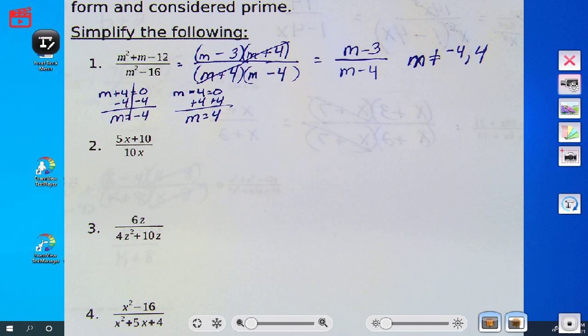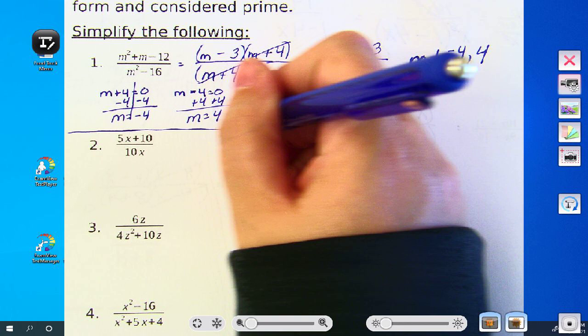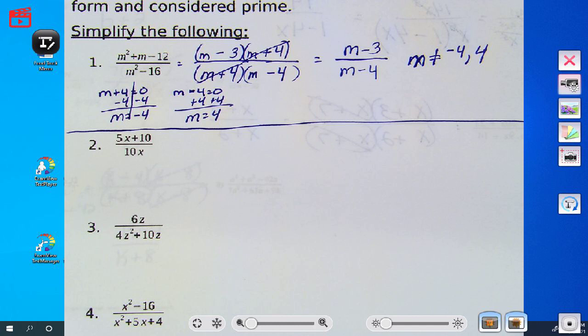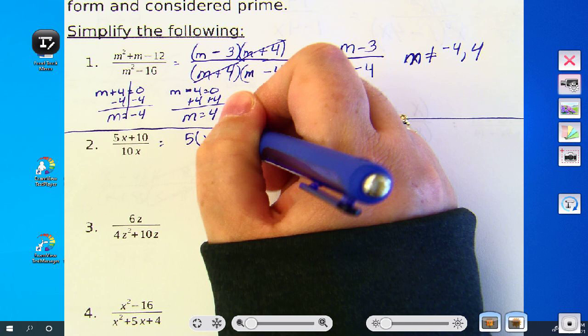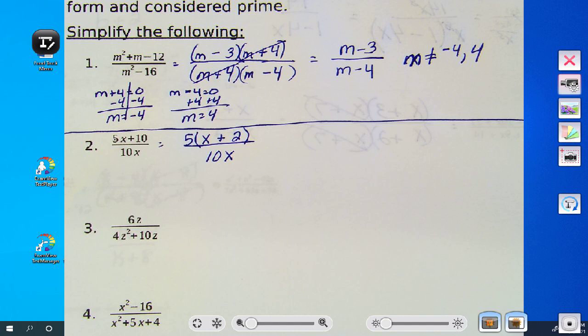So now let's go back. You can see you cancel out the m plus 4's. You're left with m minus 3 over m minus 4. Okay. Questions? Okay. Let's go back to the second one. Okay. Questions? Is there a GCF in the numerator? Yes. What is it? 5. So divide the whole top by 5. 5x divided by 5 is x. 10 divided by 5 is 2. You're probably sitting there saying, oh, there's no restrictions in this one. Wrong. If there's a variable in the denominator, there's a restriction. You're going to set the denominator equal to zero.